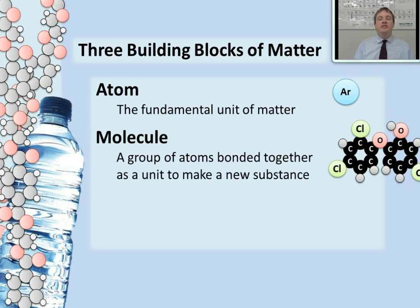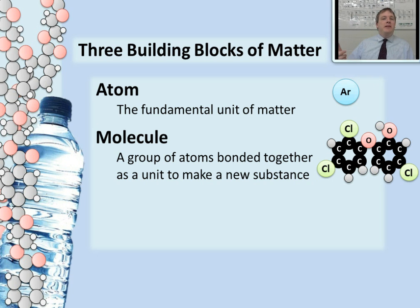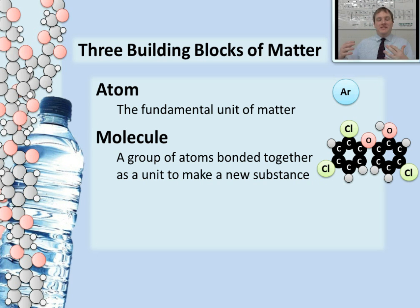A molecule is a group of atoms bonded together, like this triclosan molecule. Triclosan is a pretty complicated molecule. It is used in antibacterial hand soaps as an antibacterial agent. It's become a source of criticism lately because people are concerned that overuse of this molecule may cause bacteria to become resistant to triclosan and maybe to other antibacterial agents as well. So this molecule, this group of atoms bonded together, is something that is newsworthy and maybe something we should reconsider using.